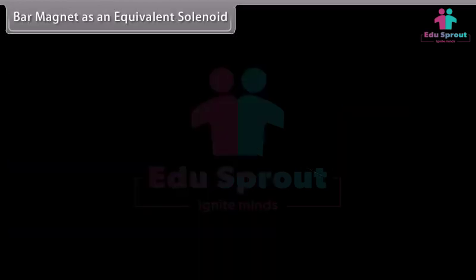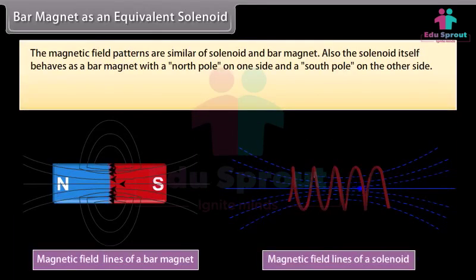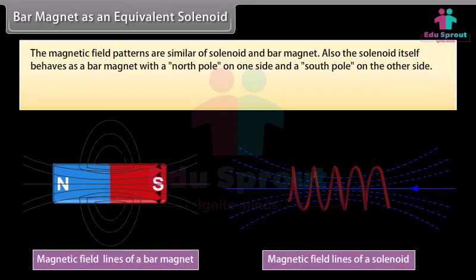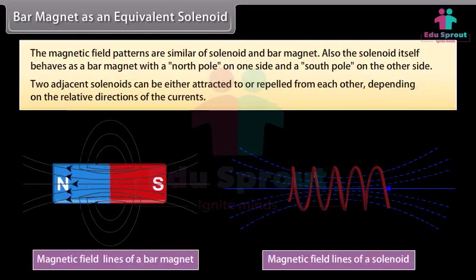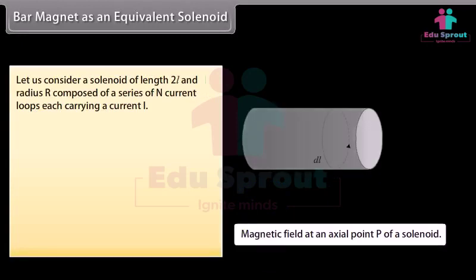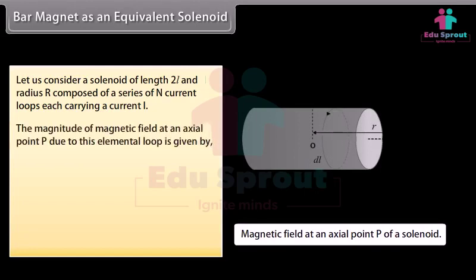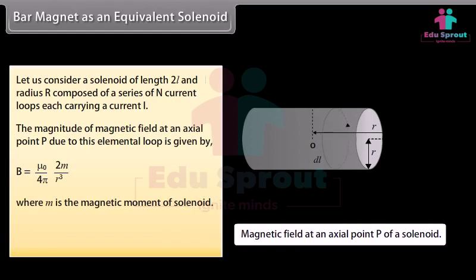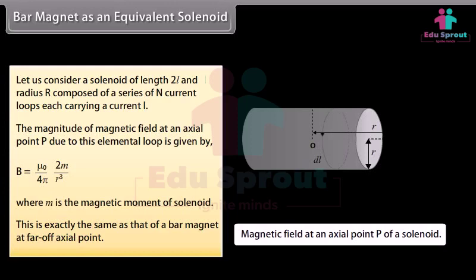Bar magnet as an equivalent solenoid: The magnetic field patterns of a solenoid and bar magnet are similar. The solenoid itself behaves as a bar magnet with a north pole on one side and a south pole on the other. Two adjacent solenoids can either attract or repel each other depending on the relative directions of the currents. For a solenoid of length 2L and radius R with N current loops each carrying current I, the magnetic field at an axial point P is given by mu naught upon 4pi multiplied by 2m upon R cubed, where M is the magnetic moment. This is exactly the same as that of a bar magnet at a far off axial point.